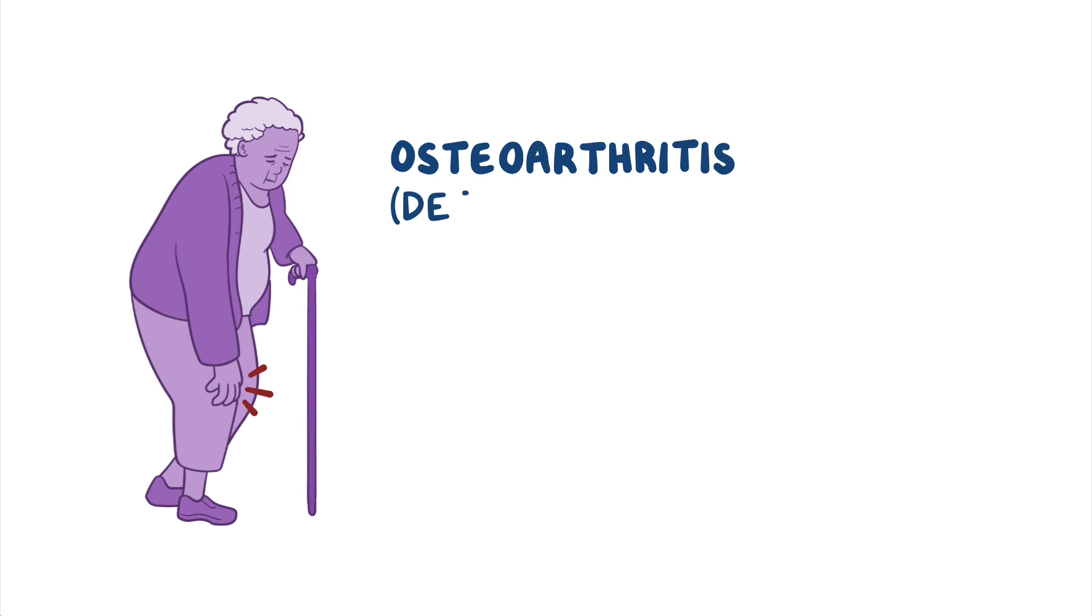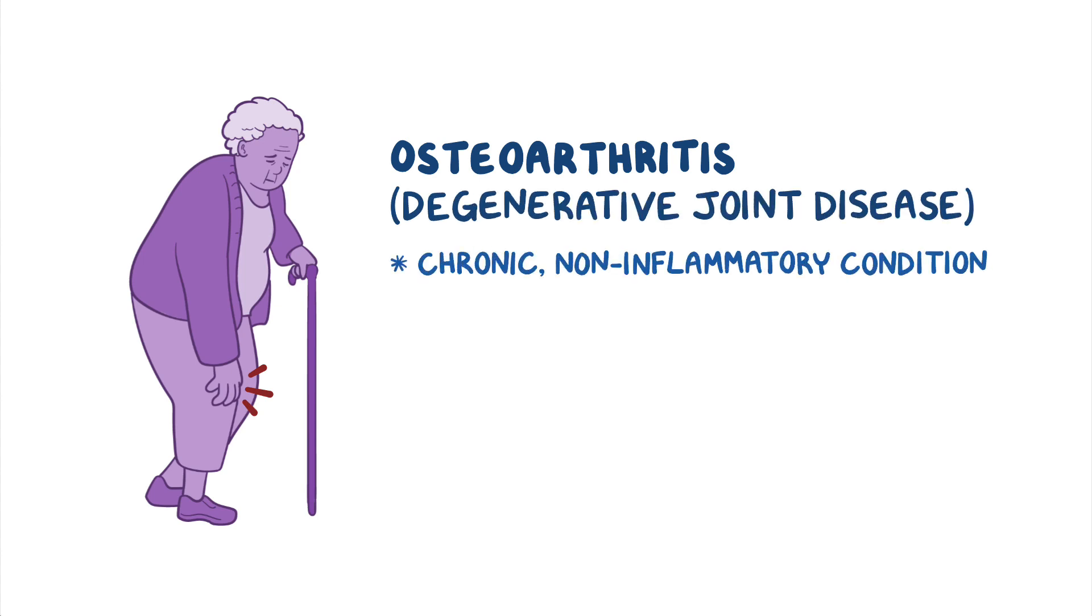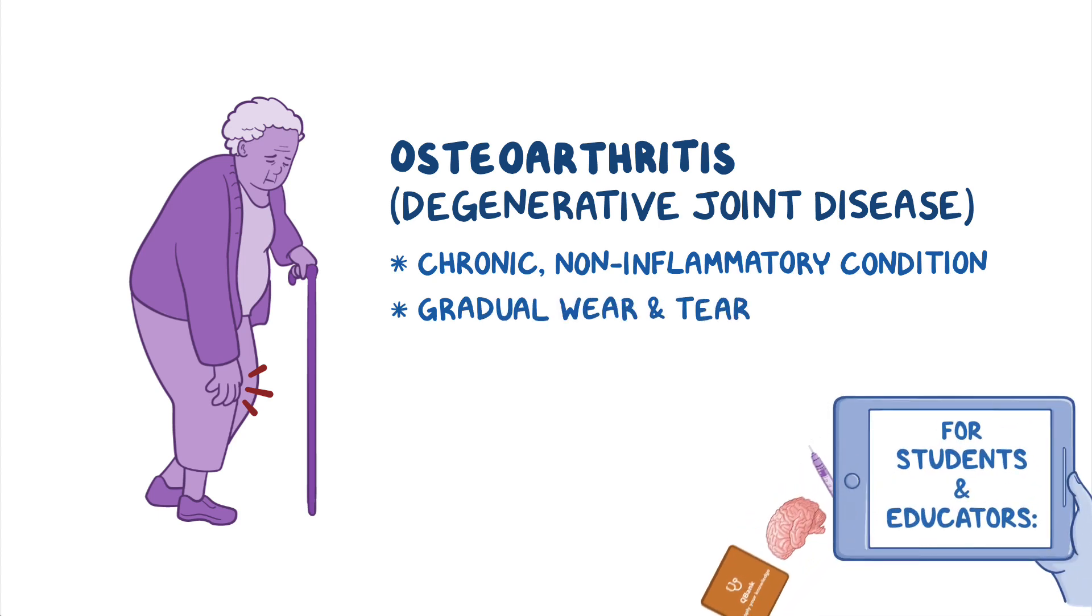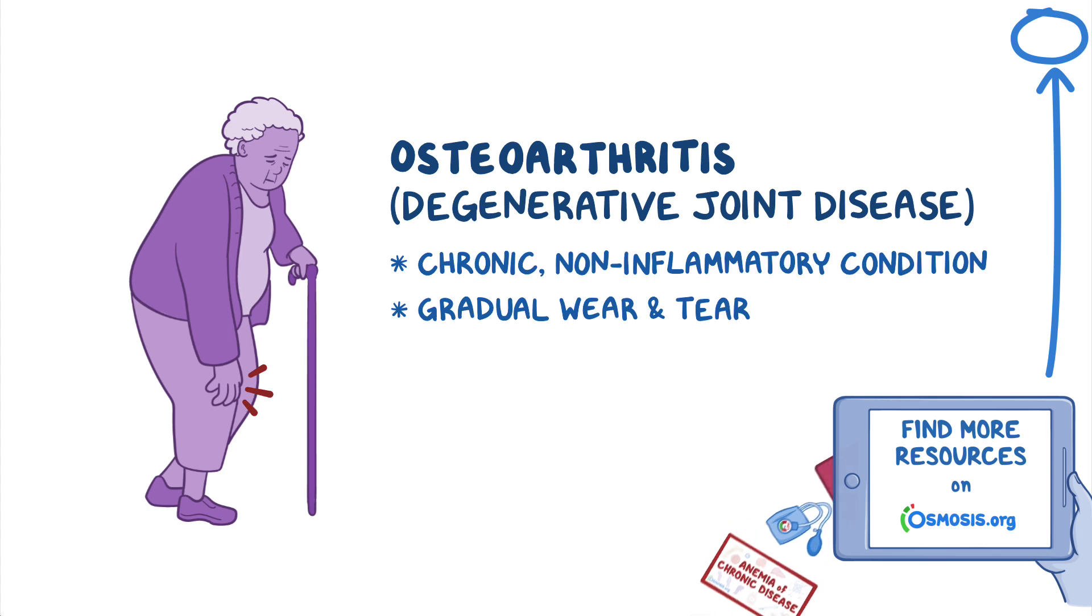Osteoarthritis, also known as degenerative joint disease, is a chronic, non-inflammatory condition characterized by gradual wear and tear of joint cartilage and underlying bone, followed by inadequate repair. In fact, it is the most common type of arthritis overall.